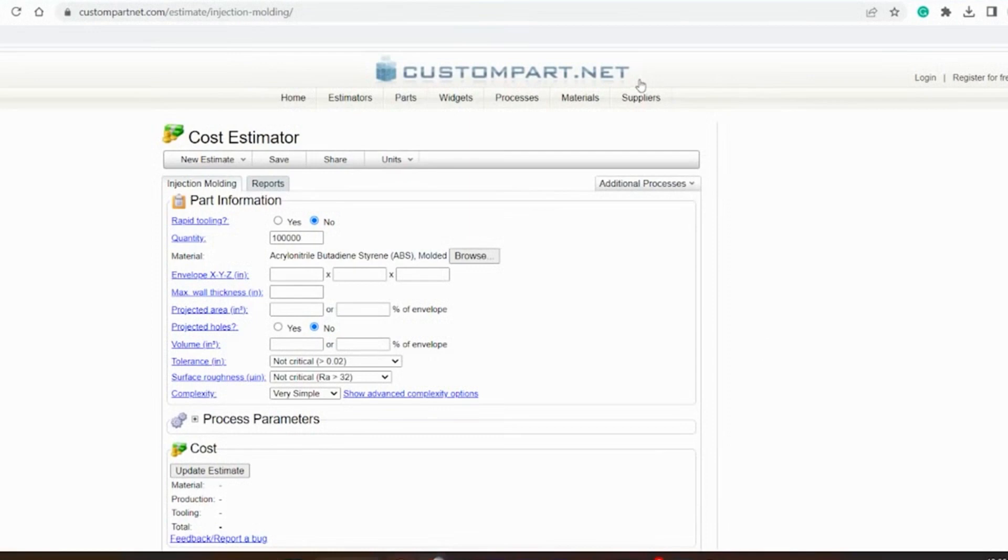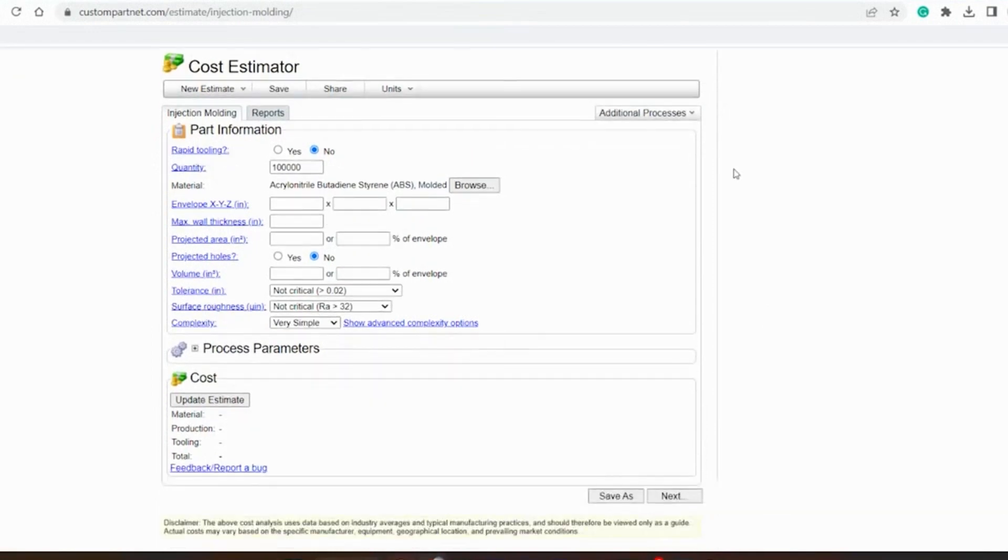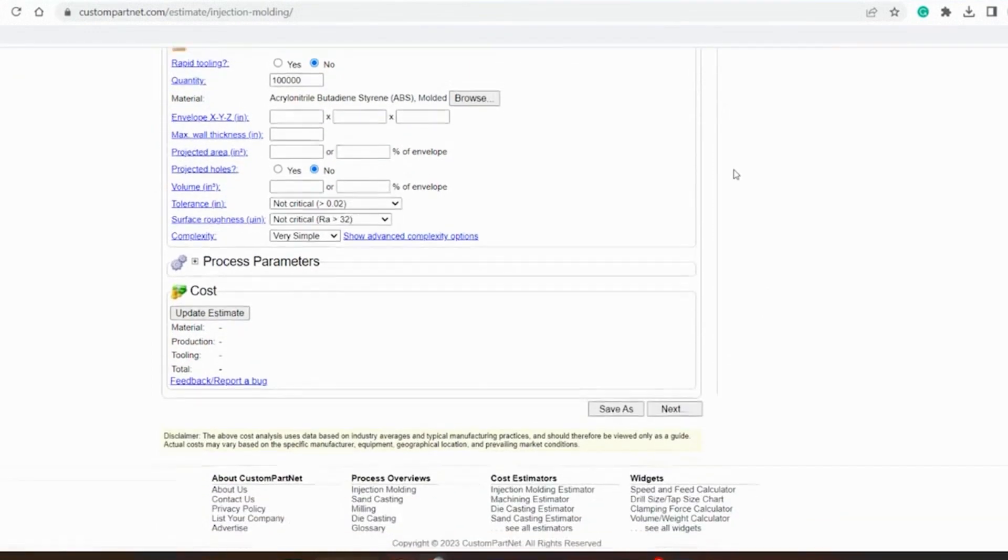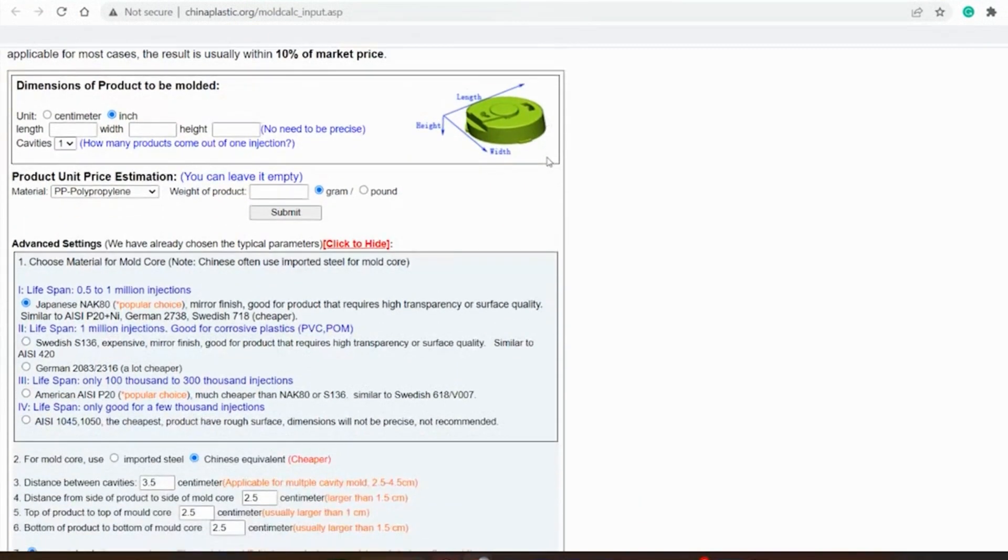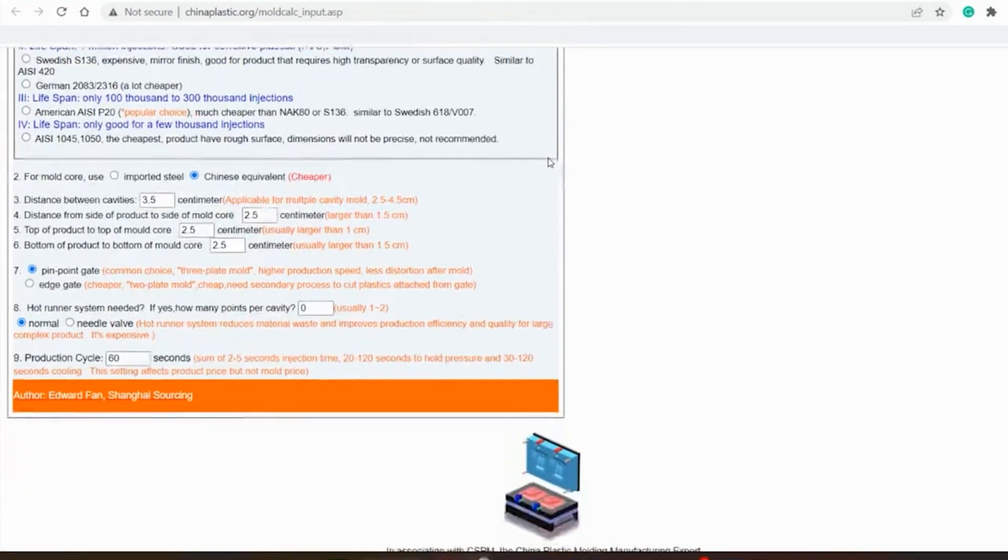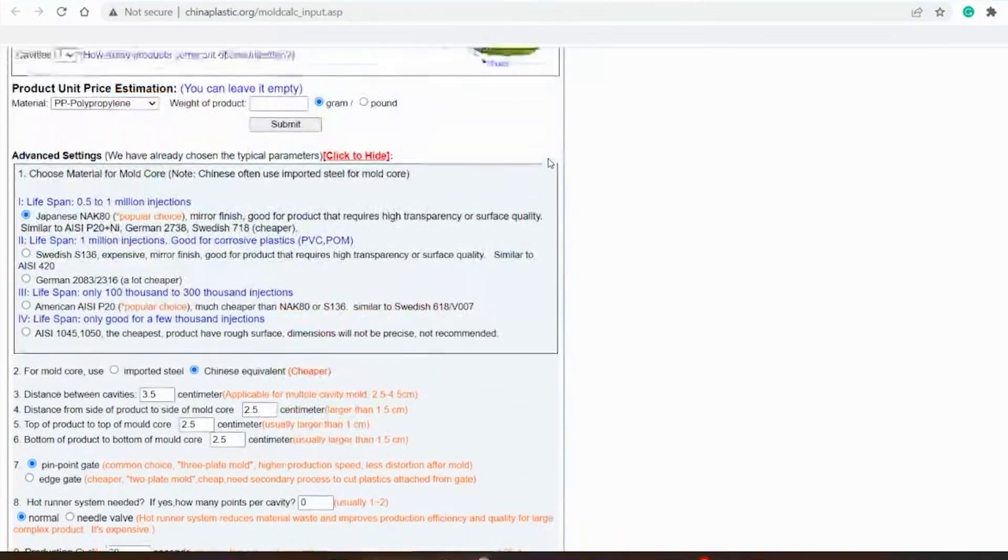A website, custompartnet.com, has a really nice tool for helping you estimate the manufacturing cost for a custom injection molded part. The website chinaplastic.org, which I referred to for getting an estimate on the mold cost, also provides estimates on the part cost.